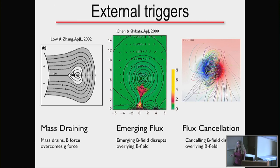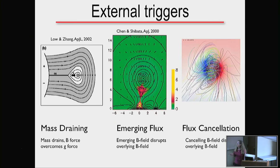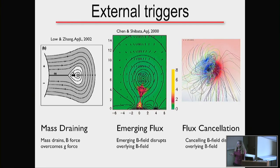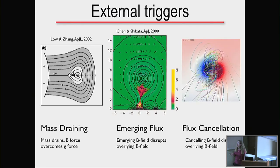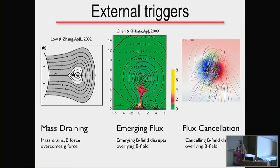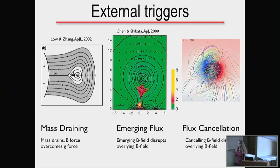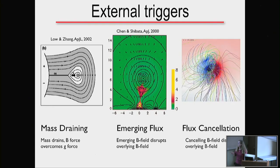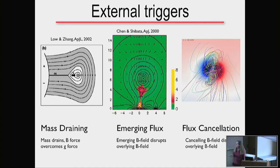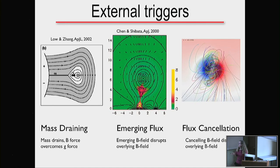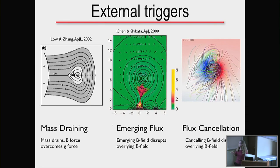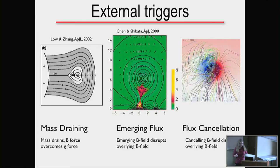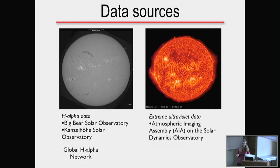You can also have external triggers. For example, mass draining: if forces are in balance including gravity, and you lose mass from the prominence, forces become unbalanced and it erupts. Emerging flux can change the overlying field so it no longer holds the prominence down. Flux cancellation can also destabilize the field. That's a very fast summary of triggers.